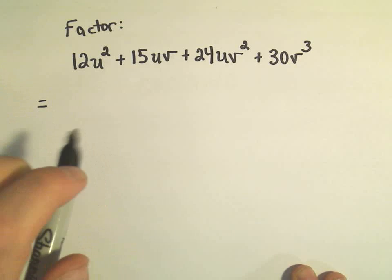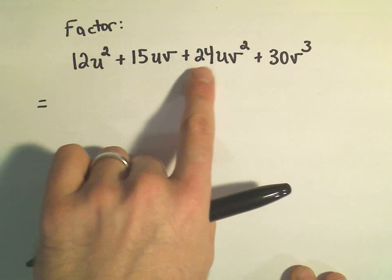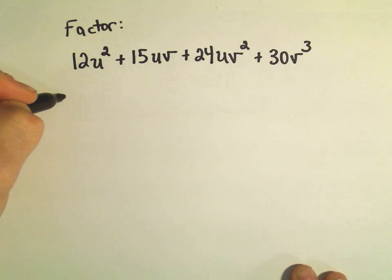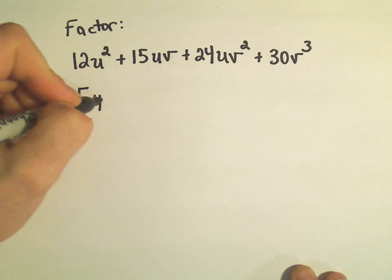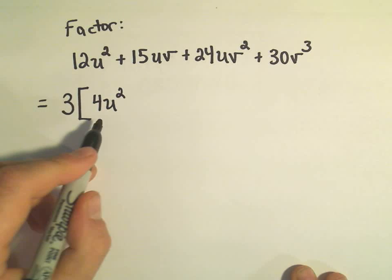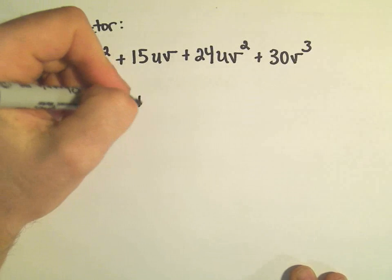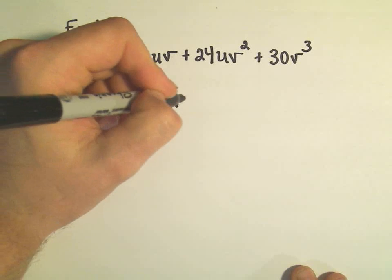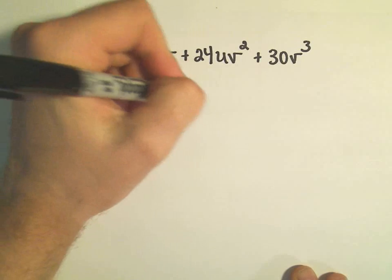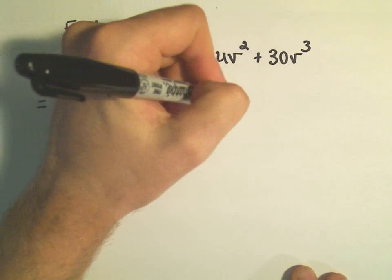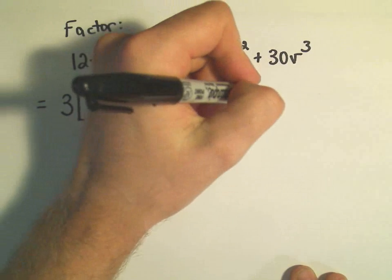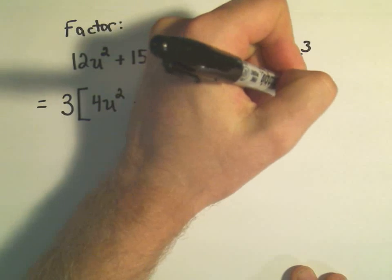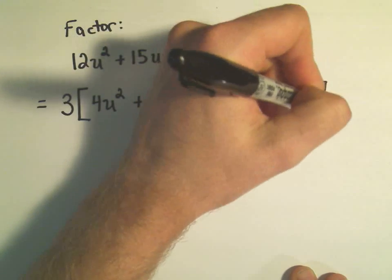But I can think about the greatest common factor of 12, 15, 24, and 30, and I think the biggest number that would go into all of those would be 3. So I'm just going to factor that out. So we would need a 4u² when we distribute to get our first term, 5uv to get back the second term, 8uv² to get our third term, and 10v³ to get back the fourth term.